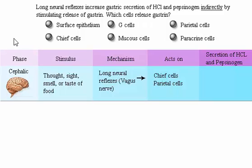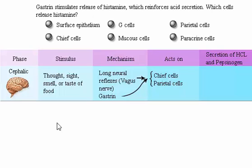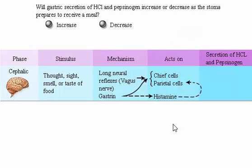Long neural reflexes also increase gastric secretion of hydrochloric acid and pepsinogen indirectly by stimulating release of gastrin from enteroendocrine cells. Gastrin stimulates release of histamine from paracrine cells, which reinforces acid secretion. Gastric secretion of hydrochloric acid and pepsinogen will increase as the stomach prepares to receive a meal.